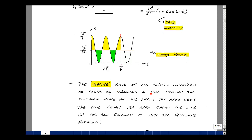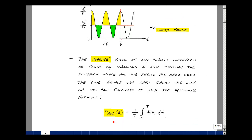The average value of this waveform is found by drawing a line through the waveform where, for one period, the area above the line equals the area below the line. Here's one cycle. Here's the second cycle. In other words, this area here is equal to this area. And this area is equal to this half and this half added together. You can also calculate it with the following formula. The average value is equal to 1 over the period integral from 0 to a period of f of t dt. Let's apply that to this waveform.